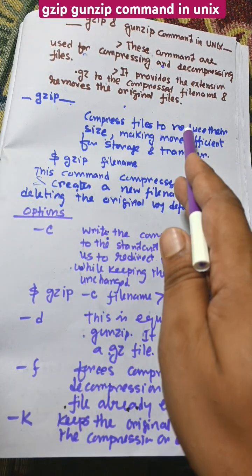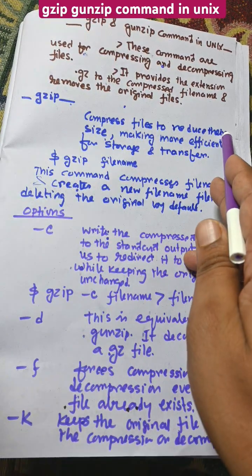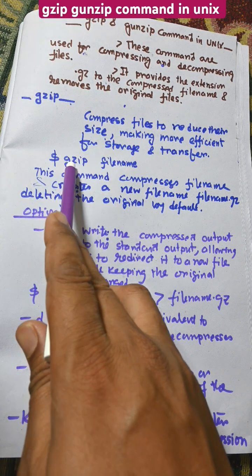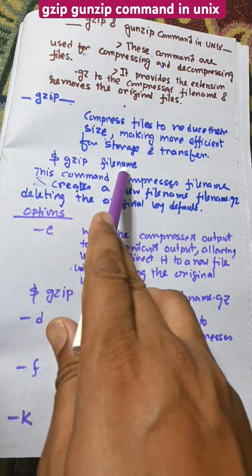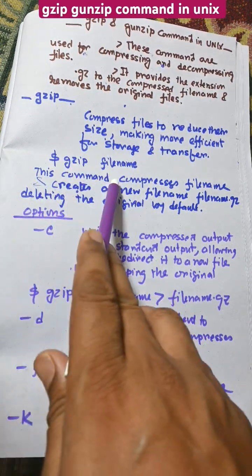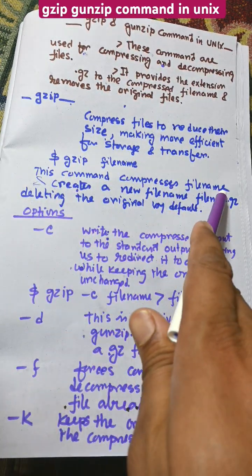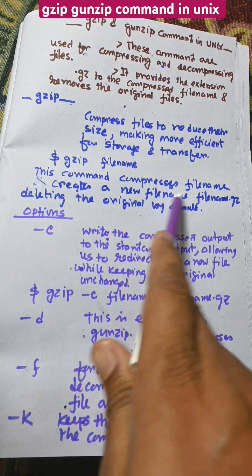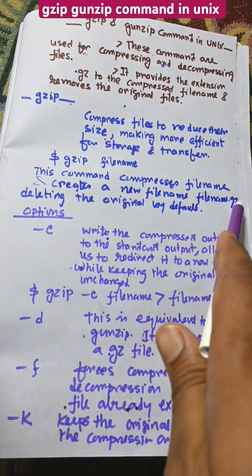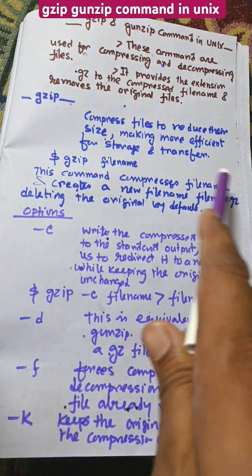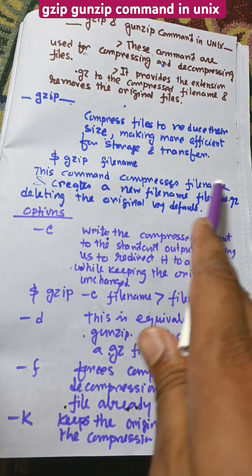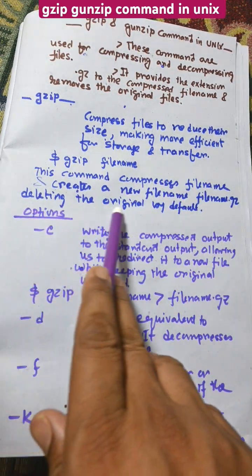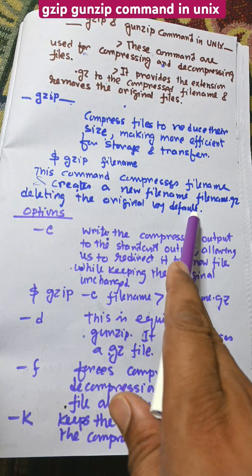It is used to reduce file size. For example, the command `gzip filename` compresses the file and creates a new file called filename.gz. The original file will be removed — deleting the original file is the default behavior.